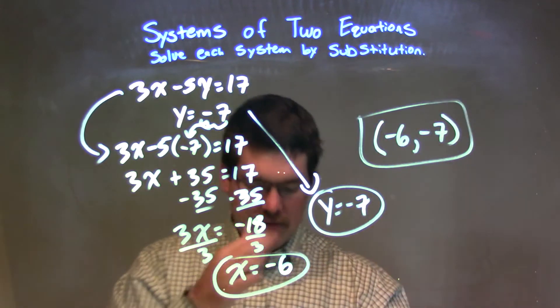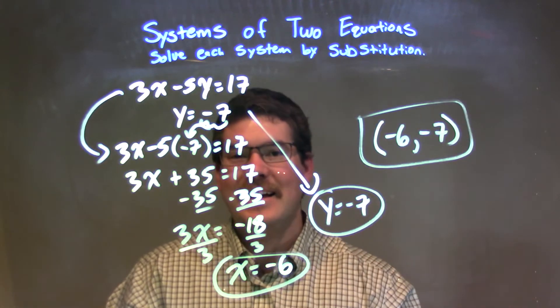There we go. Our answer is pretty simple here, is negative 6 comma negative 7.